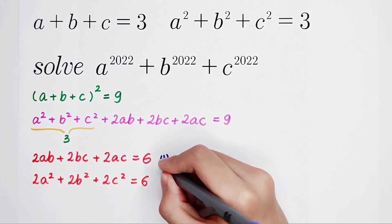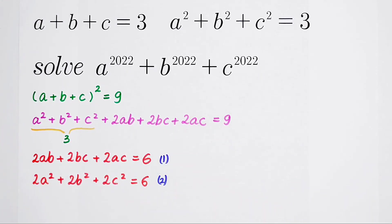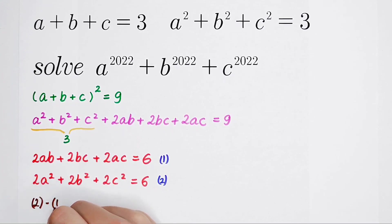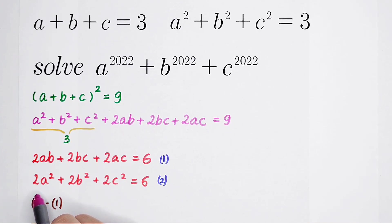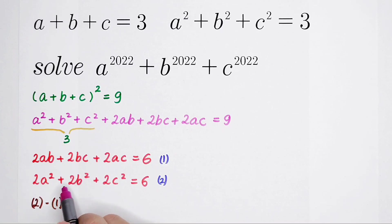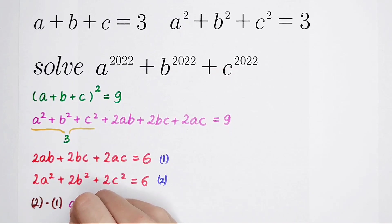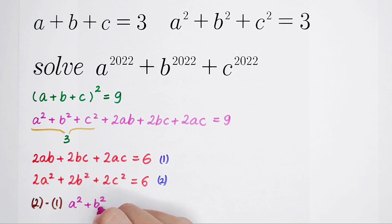Now I have two equations: the first equation and the second equation. I'm going to do something wonderful — take the second equation minus the first equation. Because we have 2 times A squared, I can separate A squared from 2A squared. Similarly, I separate B squared from 2 times B squared.